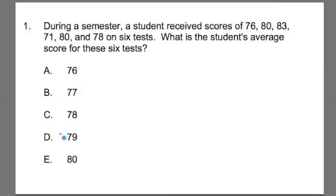So let's start. The first thing I want to do is I want to read over the question very carefully and work through identifying the key concepts and solving it. So here we go. Number one. During a semester, a student receives scores of 76, 80, 83, 71, 80, and 78 on six tests. What is the student's average score for the six tests? And it gives us a whole bunch of options on that average.